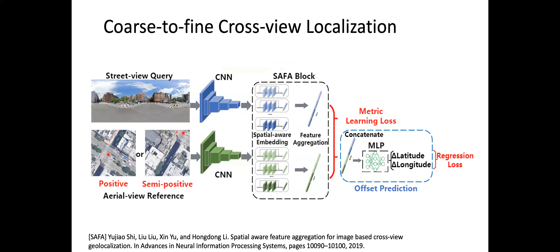Here is the overall framework of our cross-view localization method. The input is a pair of images — a query image and a reference image, either positive or semi-positive. These two images go through independent CNN models to extract features using the SAFA method (spatial-aware feature aggregation) to generate spatial-aware embedding features. We use metric learning loss to train the matching model, and we also have an auxiliary task for offset prediction, which performs GPS refinement via a regression loss. These two losses are trained together.